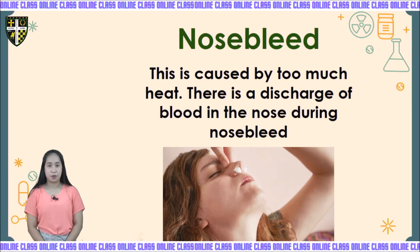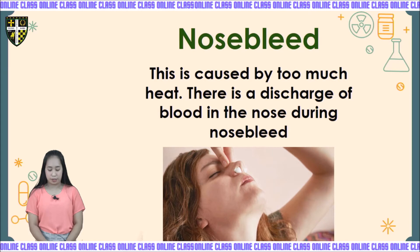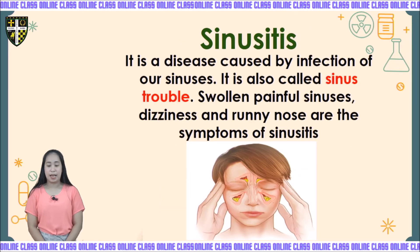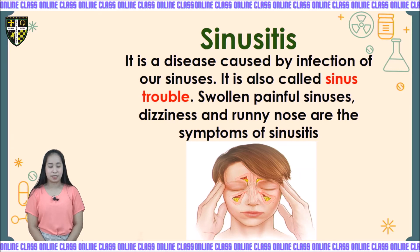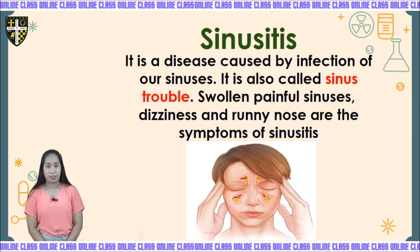Nosebleed may also result from minor irritation of the tissues found inside the nose as a result of a head or neck injury. There are sensitive nerves in the nose which easily bleed when pressed or slightly bumped. Bleeding of the nose may also result from putting foreign materials inside the nostrils. If bleeding continues for a long period, consult a doctor immediately. The next ailment is sinusitis — a disease caused by infections of our sinuses, also called sinus trouble. Swollen, painful sinuses, dizziness, and runny nose are the symptoms of sinusitis. This is dangerous because it may serve as a center of infection that can spread to other parts of the body like the brain or the eyes.